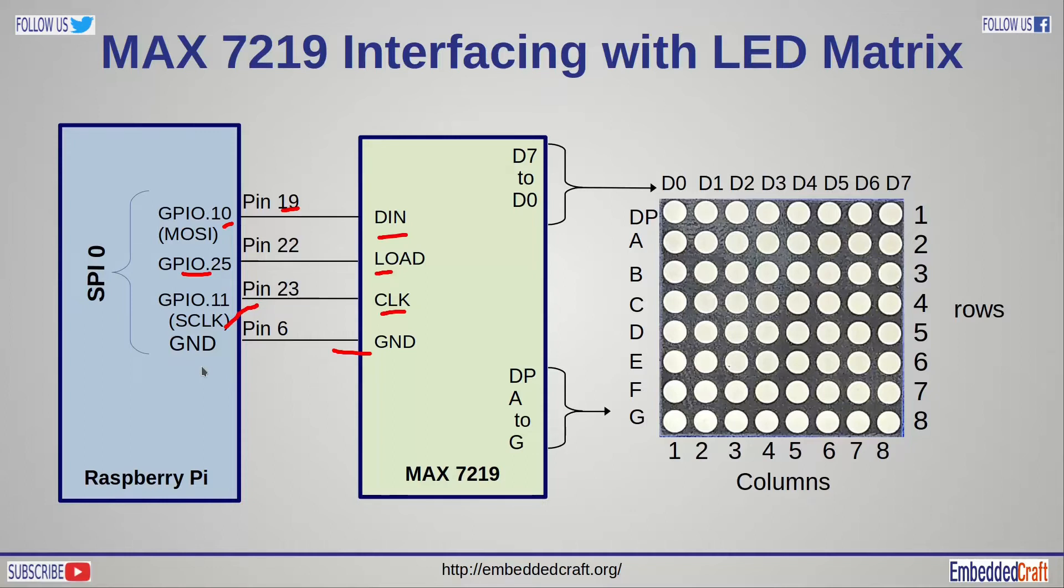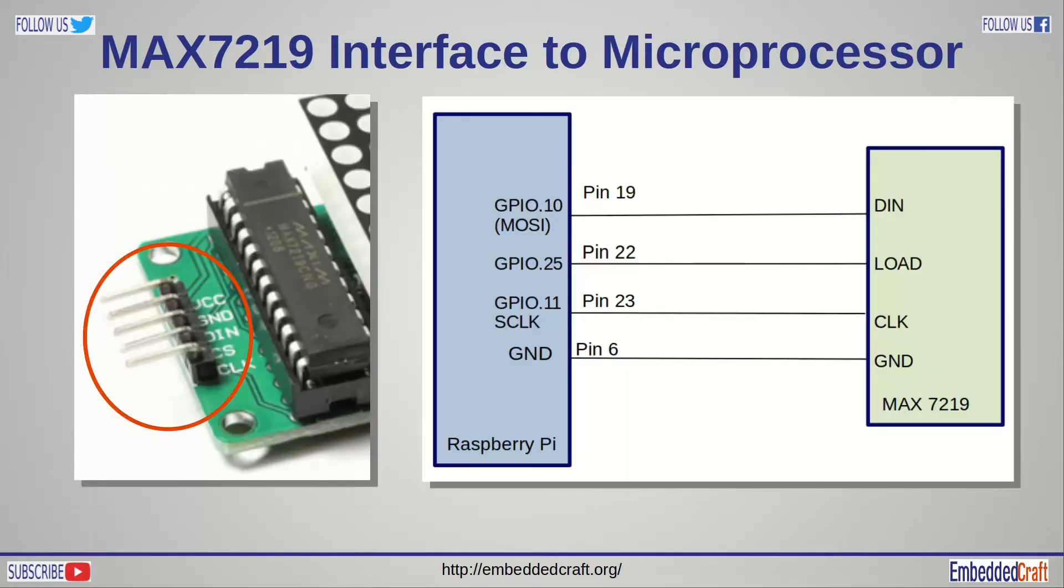Ground pin of Max 7219 is connected to ground pin of Raspberry Pi. And most important connection is rows and columns. D0 to D7 pins of Max 7219 are connected to column of LED matrix display. Segment pins of Max 7219 are connected to rows of LED matrix. As we will use LED matrix module, you will find all connections already present. You can identify pins on LED matrix module.